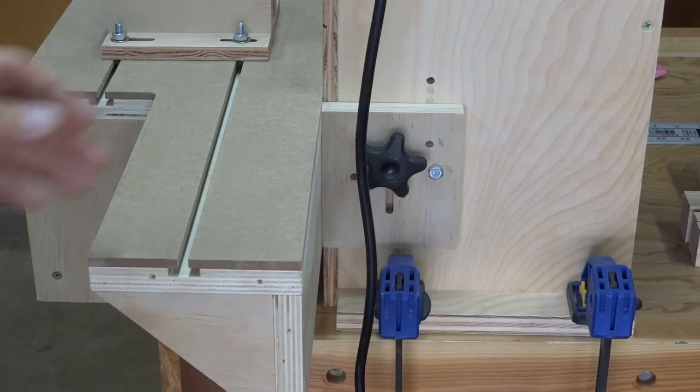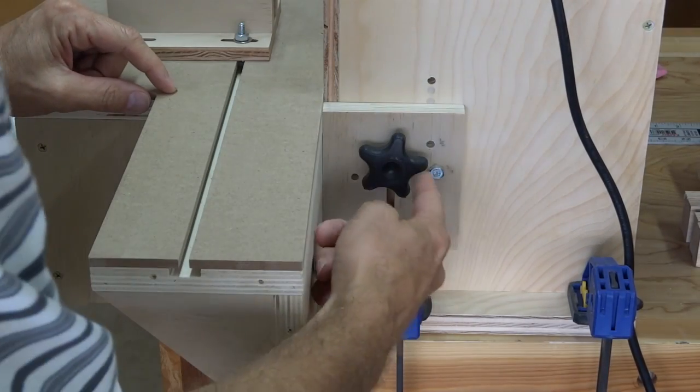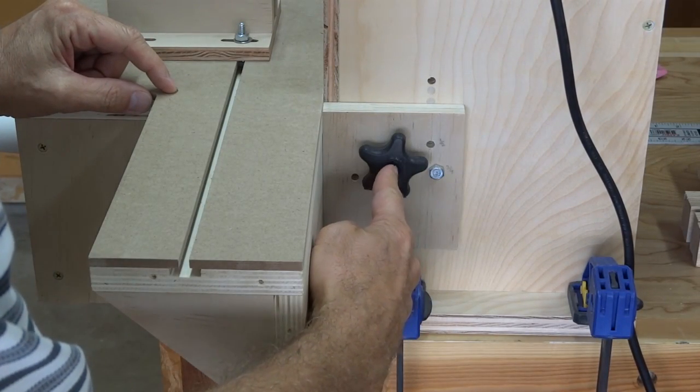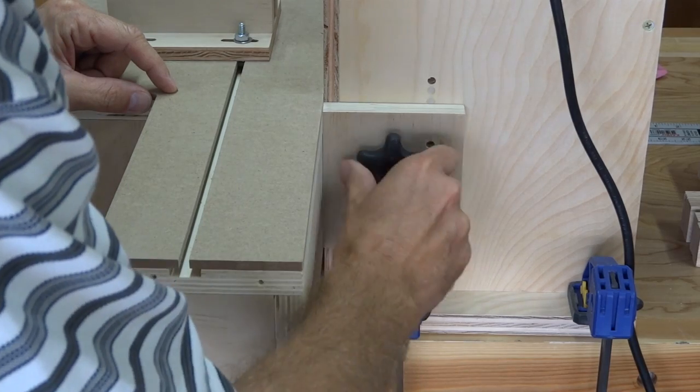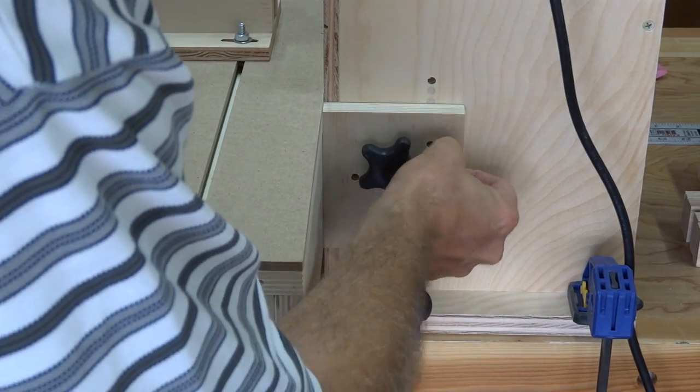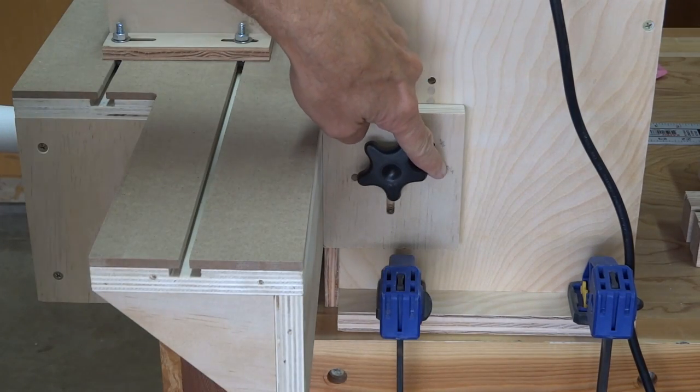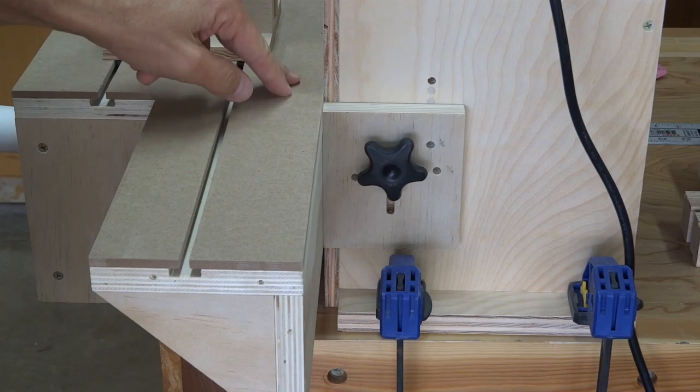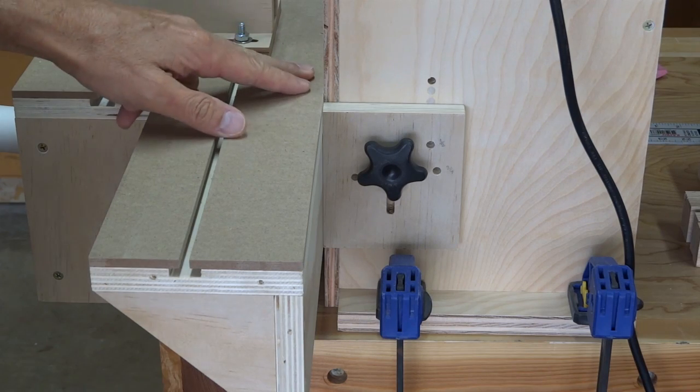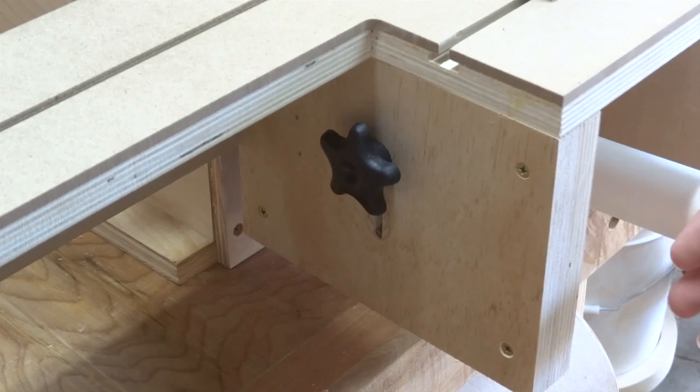The pocket hole machine consists of an adjustable table which is locked in position by star knobs on either end of the table. The height of the table can be set to accommodate any size and thickness of material. However, I created positive stop lock positions for half inch material, three quarter inch and one and a half inch material. The positive lock is engaged by a simple bolt when the table aligns with the correct position on the main body of the device.